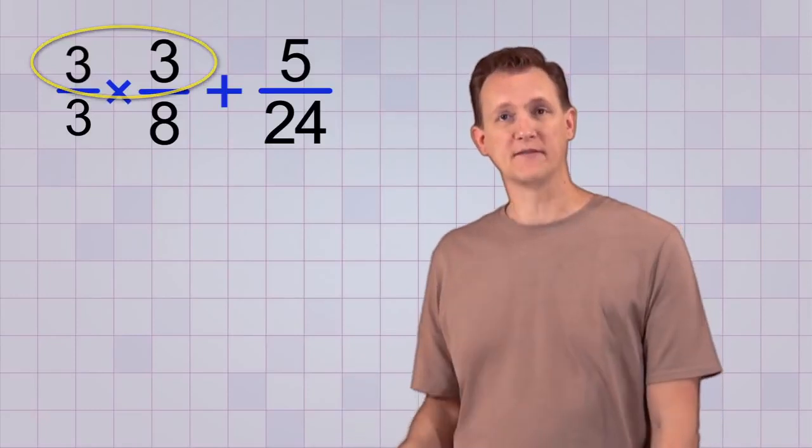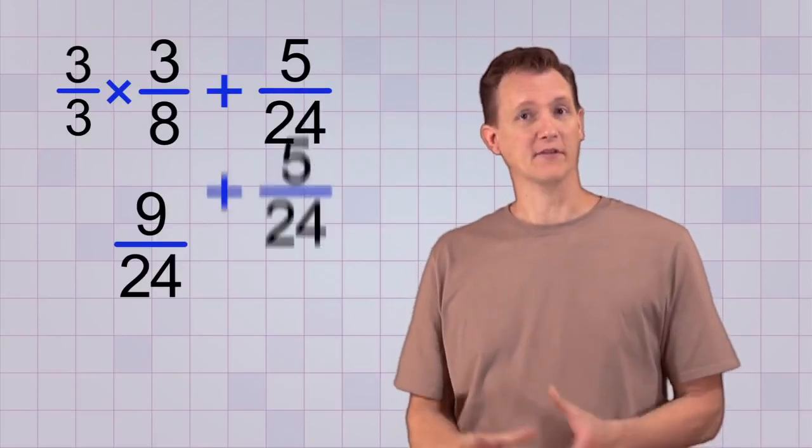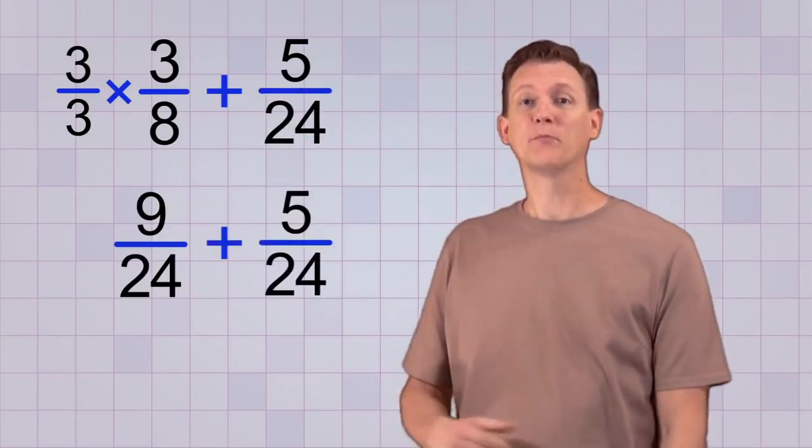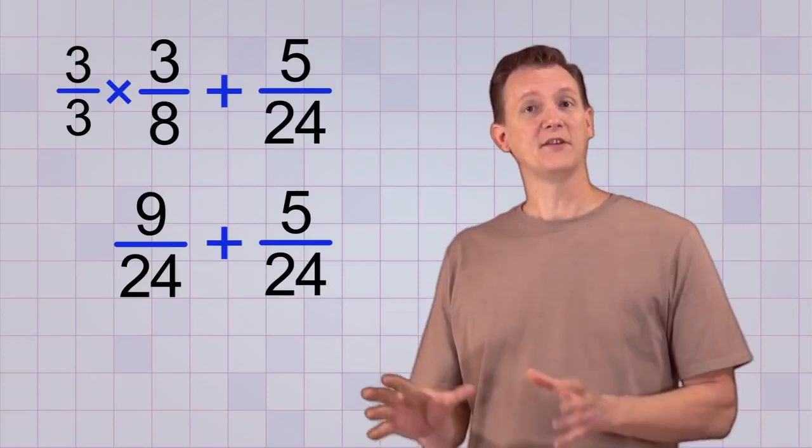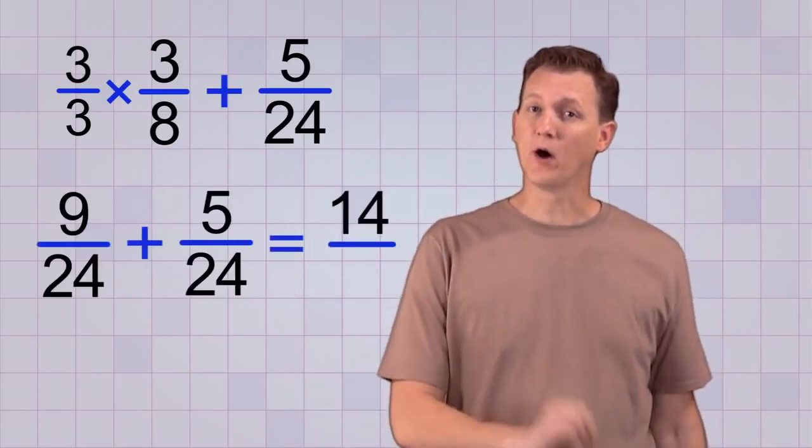Okay, now we multiply. On top, 3 times 3 gives us 9, and on the bottom, 8 times 3 gives us 24, just like we wanted. Now we have like fractions, and we can use our simple procedure to add them. We add the top numbers, 9 plus 5 equals 14, and we keep the same bottom number, 24.